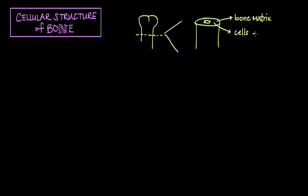Now let's talk about the cellular structure of bone. You can think of bone as being mostly made up of the bone matrix and then the cells that actually help to form this bony matrix.